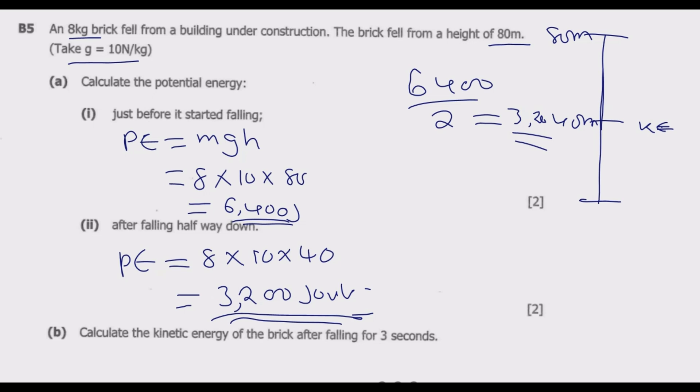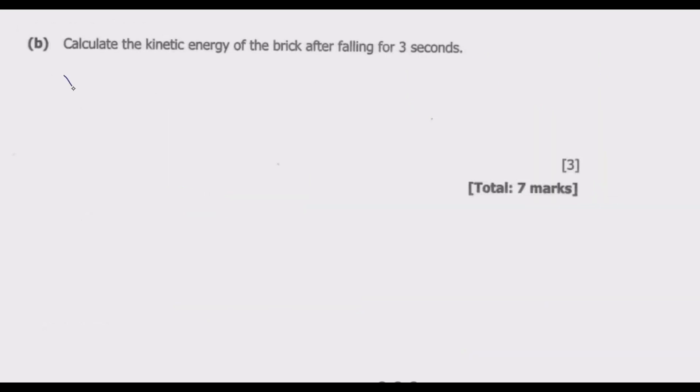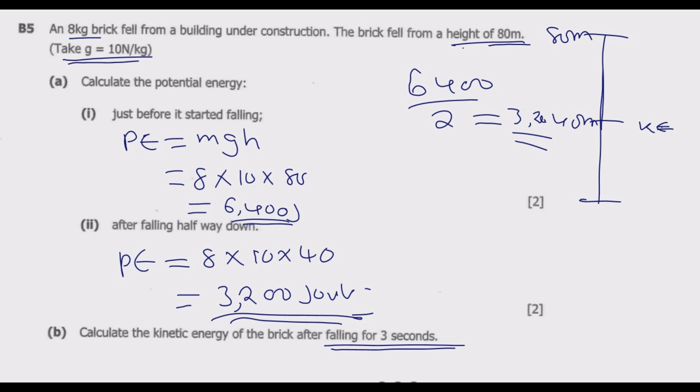Calculate the kinetic energy of the brick after falling for 3 seconds. We've been given time and height. Final velocity is given by initial velocity plus acceleration times time. The time is 3 seconds, and gravity is 10 newtons per kg, which implies acceleration due to gravity is 10 meters per second squared.